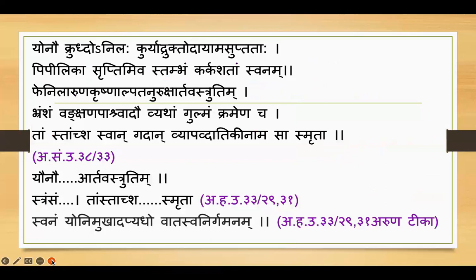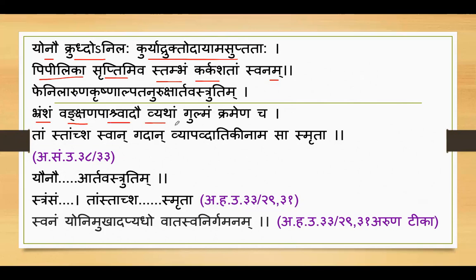According to Ashtanga Sangra and Ashtanga Hrudaya, the reference can almost be correlated with Charak Samhita, but there is some difference of opinion. The shloka reads: 'Yono kruddho anilah kuriyad rukto ayasam suptata, pipilika suptimiva stambham karkashata svanam, phenila aruna krishna alpa tanuruksha arthavastuti, bramsha vangshana parsva ado vyatham gulmam krameṇa cha, tamastha mascha svanam gadan, vyapad vati ki naam sasmruta.'